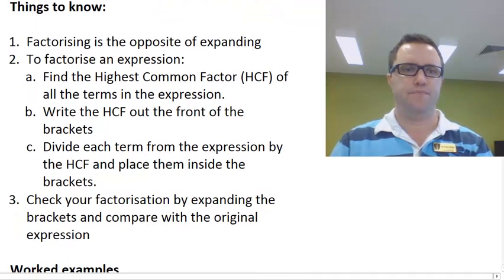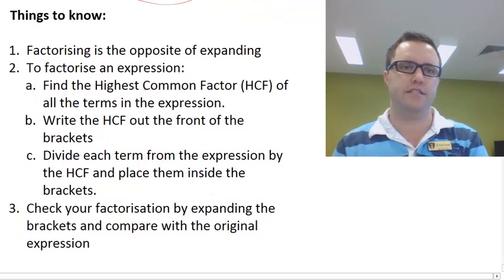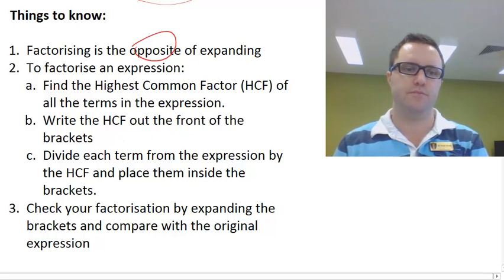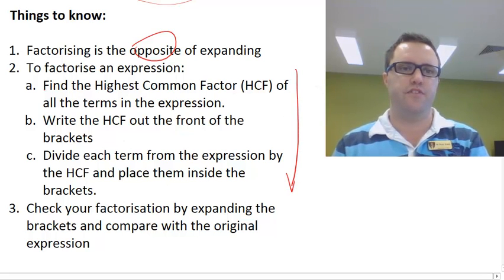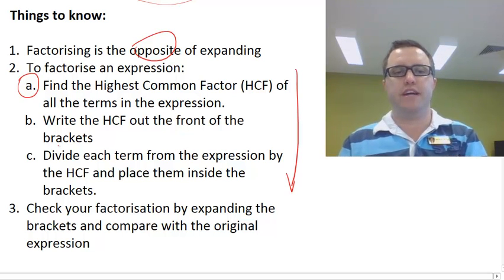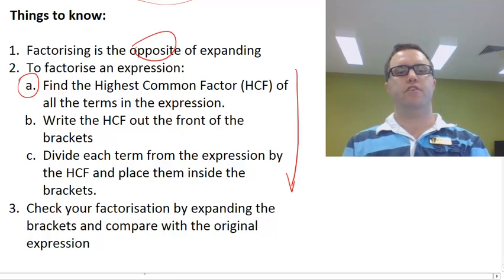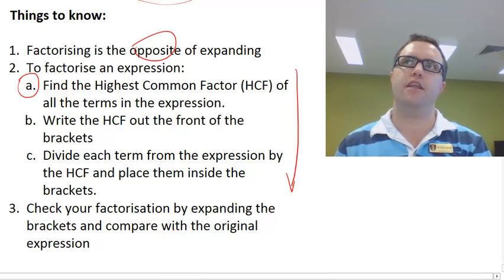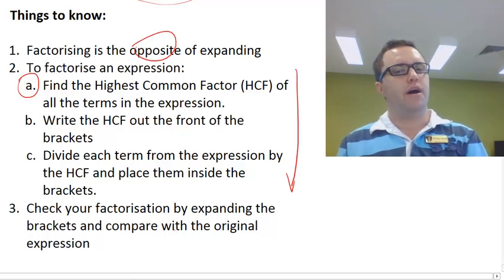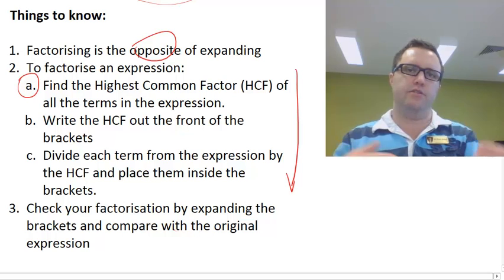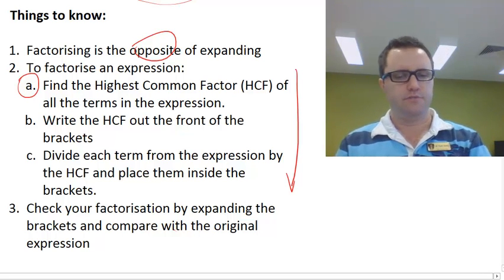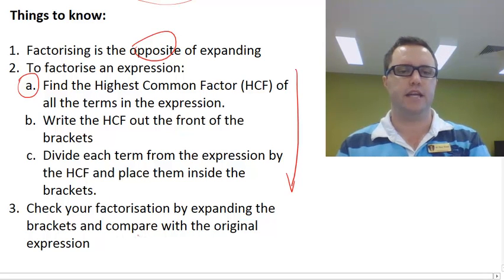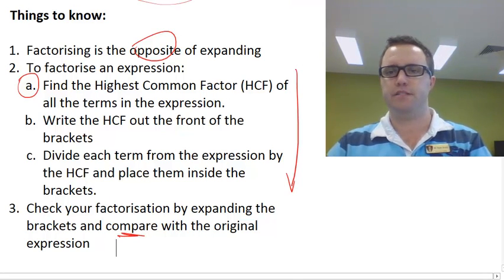A couple of things that we need to know. Factorising is the opposite of expanding. To factorise an expression, we follow this process. First, find the highest common factor of all the terms in the expression. Secondly, write the highest common factor out the front of some brackets. Then divide each term from the expression by the highest common factor and place them inside the brackets. It's probably a good idea to check your factorisation by expanding your brackets and comparing it with the original expression.